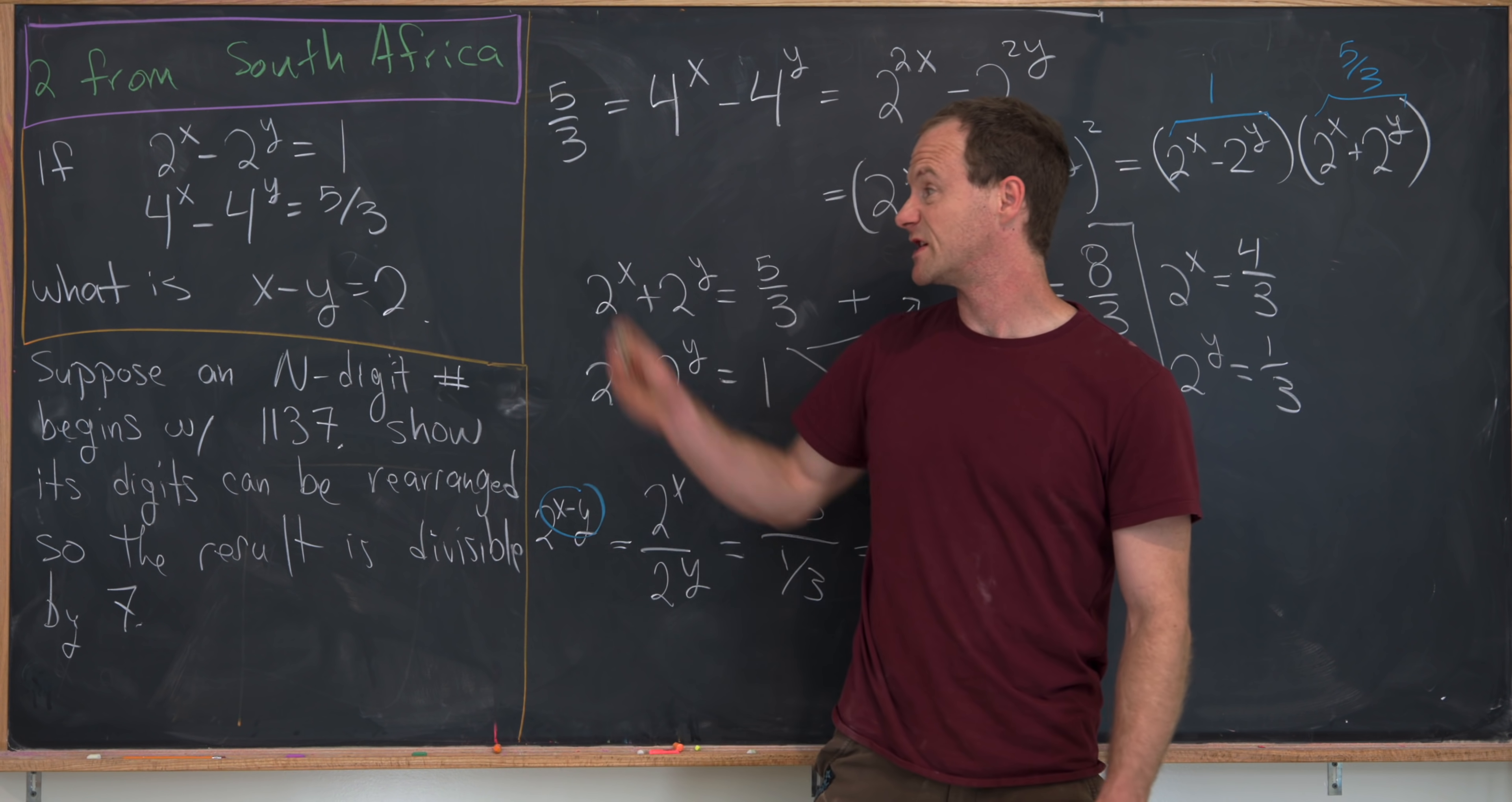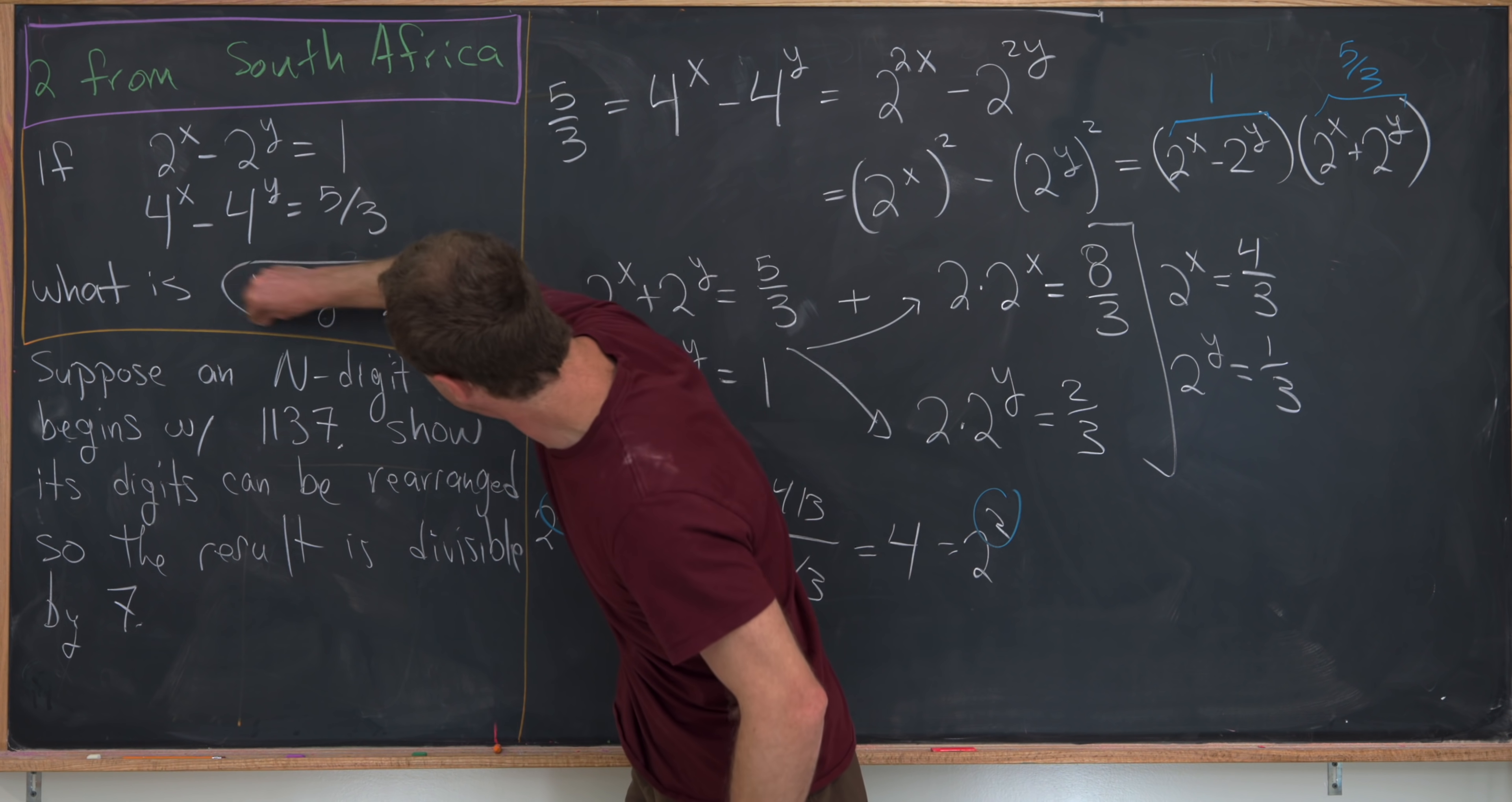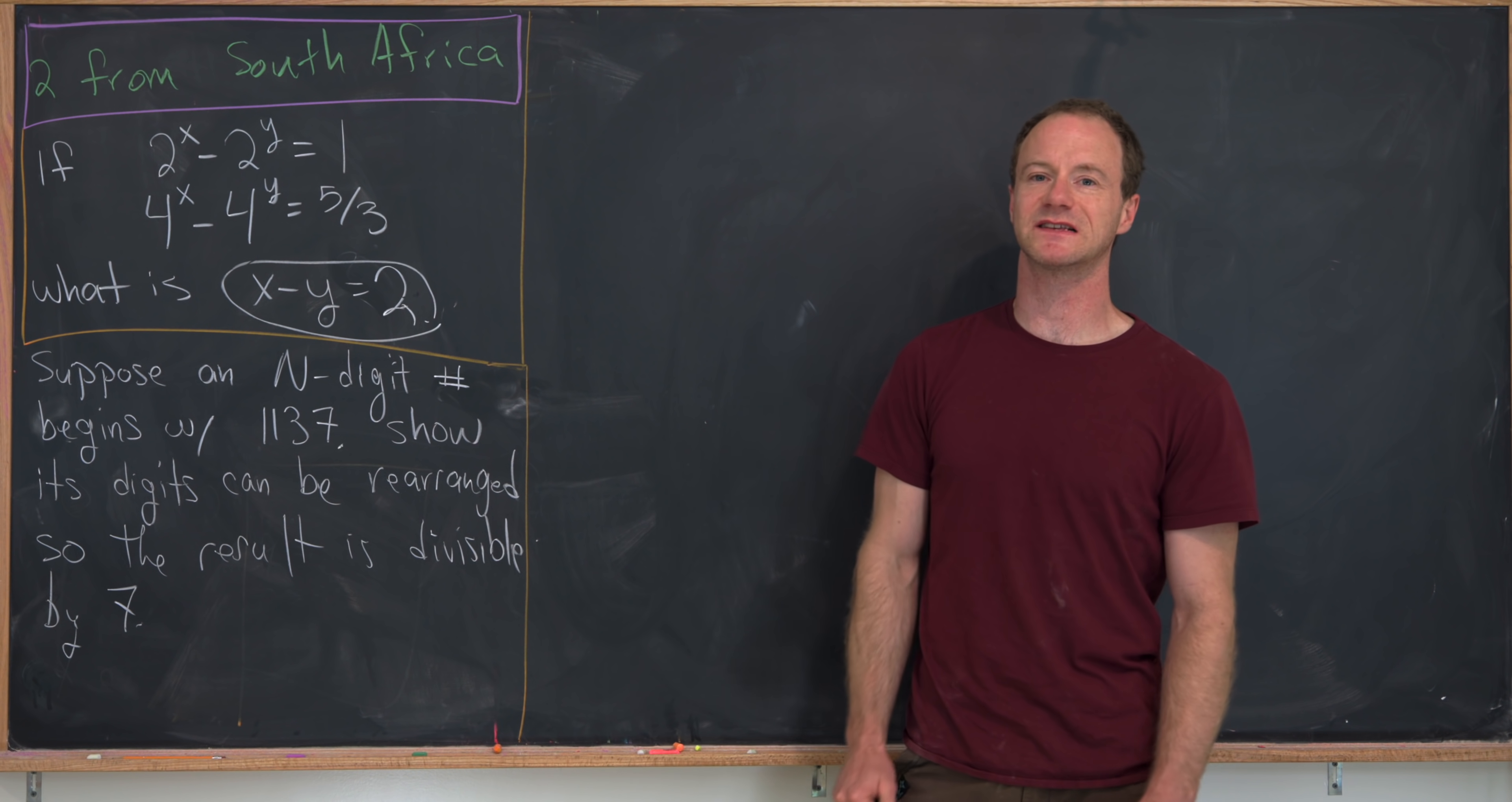And so that maybe finishes off this first one. We get x minus y is equal to 2. And so now let's move on to the second one. Okay, we got done with this first problem. Now we're ready to look at the second one.